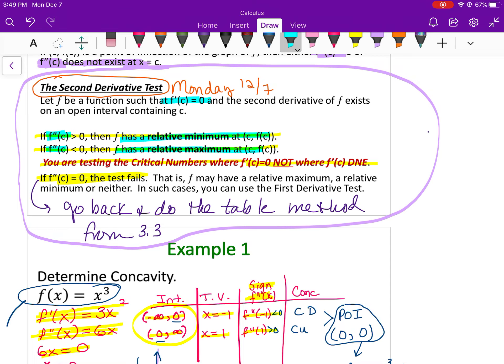If f double prime at C equals zero, the test fails and you have to come up with another plan, which means you have to go back and do the table method from 3.3. Another important note: you're testing the critical numbers where f prime of C equals zero only, not where that first derivative is undefined.